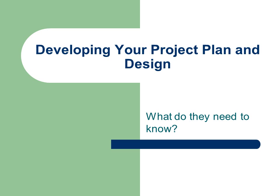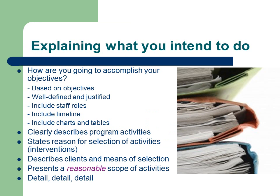Developing your project plan and design: I want to know how you're going to accomplish your objectives. Clearly describe your intervention strategies, your program activities, and the reason why you've selected those activities over others. Describe the priority population and how you're going to select people for participating. Present a reasonable scope of activity — one real red flag is if somebody says 'we're going to change the world and do all these things.' They'll pick up on that. Provide what is reasonable and what you can reasonably accomplish within a given period of time, and be very detailed, not vague, in what you intend to do.